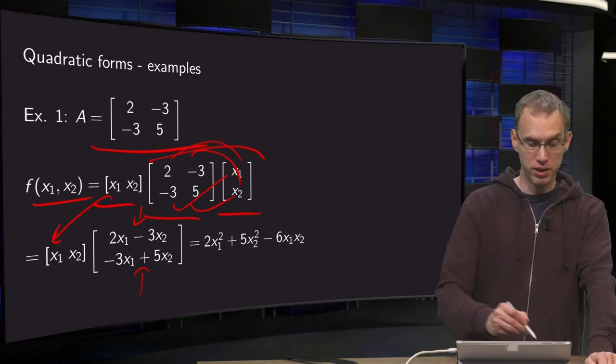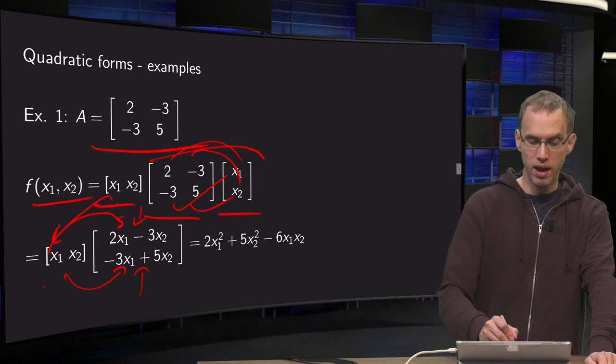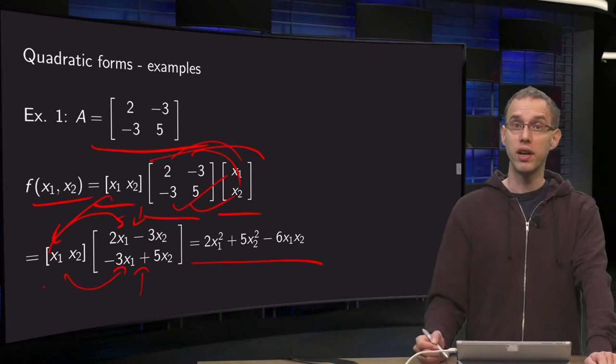Then we compute the final product: x1 times this term plus x2 times that term. And there we have our quadratic form.